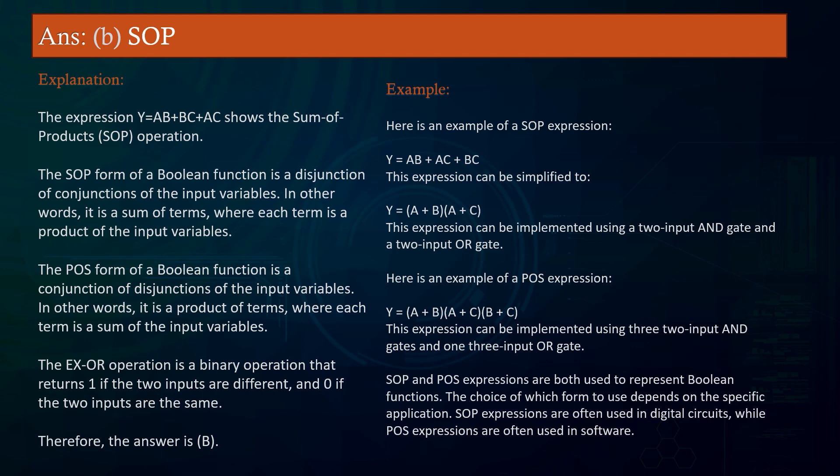Explanation: The expression is a Sum of Products (SOP) — it is a product of terms where each term is a sum of the input variables. The XOR operation is a binary operation that returns 1 if the two inputs are different, and 0 if the two inputs are the same. Therefore, the answer is B (SOP).